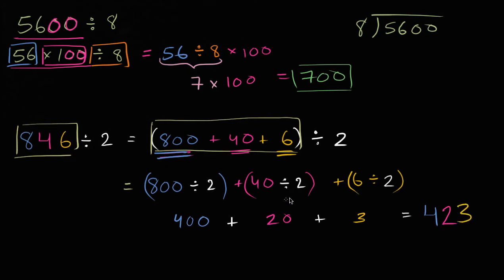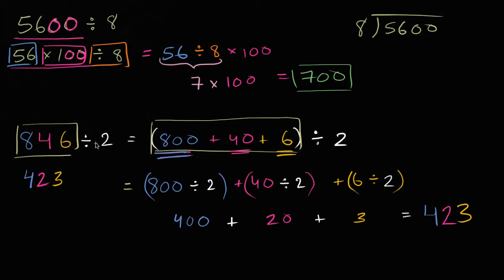Now I used a lot of my screen here to work this out for you so that you really digest what's going on here. But once you get good at it, you could say: 800 divided by 2 is 400, 4 tens divided by 2 is 2 tens, and 6 ones divided by 2 is 3 ones — so you get 423. What you're really doing is separating it out by place value — dividing each of those places, the hundreds, the tens, and the ones by 2. And by the way, that's exactly what you would do if you actually did it through long division.